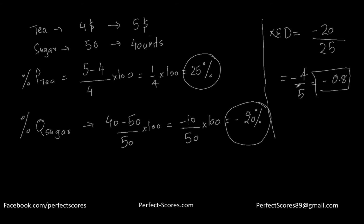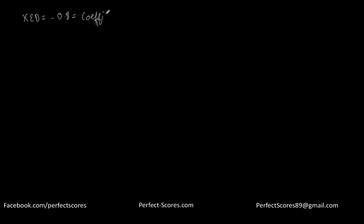So that's how you calculate XED. The value you get is known as the XED coefficient. In this case the cross price elasticity of tea and sugar is negative 0.8. Now let's interpret what this coefficient means — first I'll talk about the sign of the coefficient.